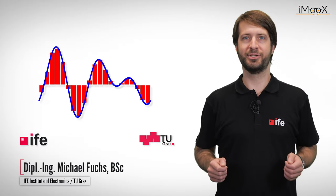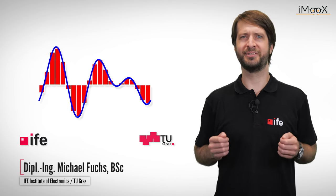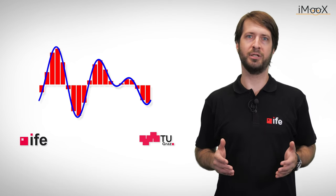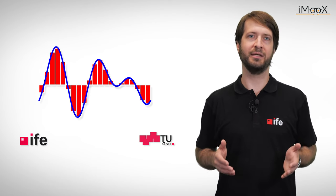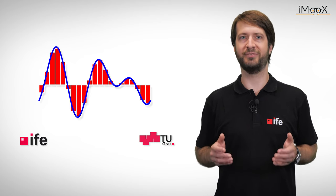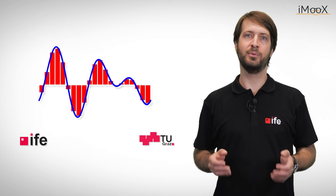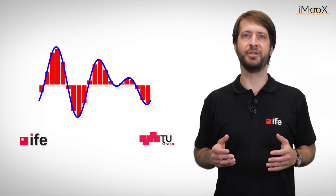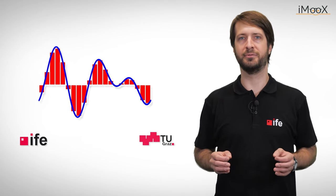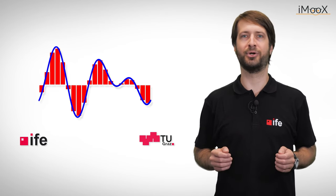Whether it is sound, images, distance, time, voltages or occurrence, we perceive our world in analog dimensions. Nevertheless, we also live in a world of numbers, arithmetic, texts and symbols. If we want to calculate with analog values, we must first find a way to make them countable. So today we want to talk about these components that convert our analog world into countable digital values — analog-to-digital converters, or ADCs for short.